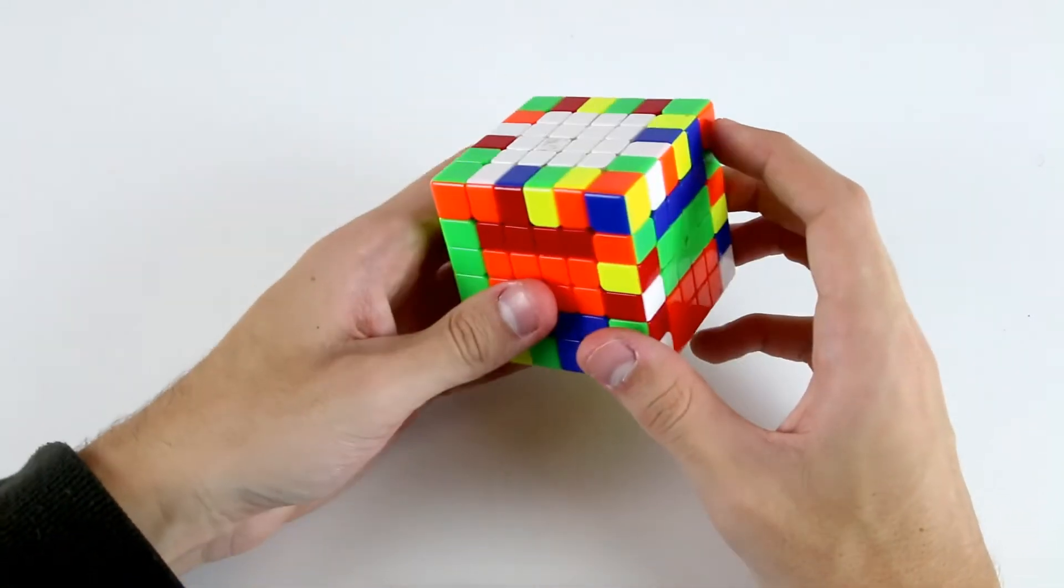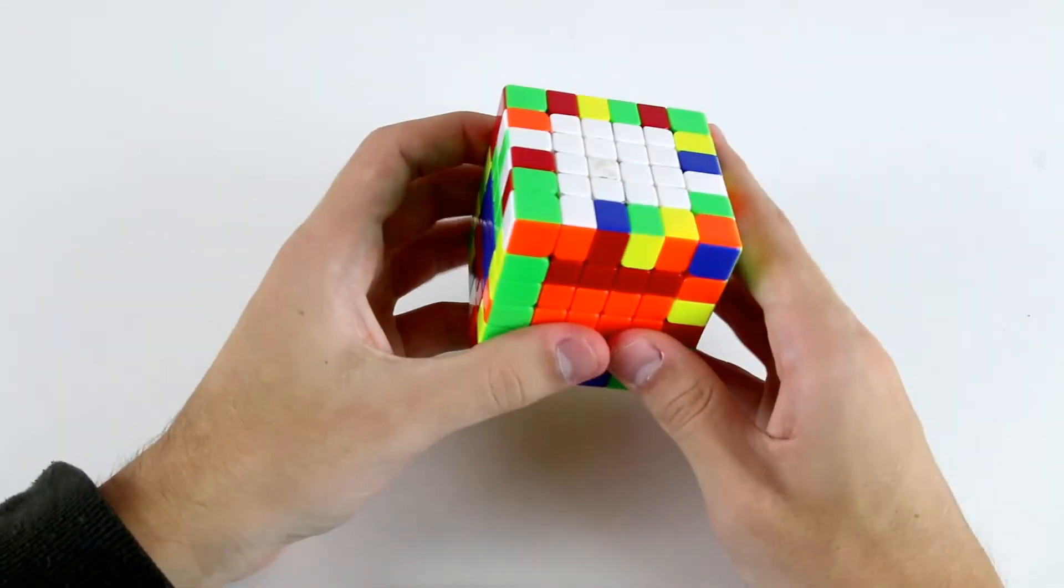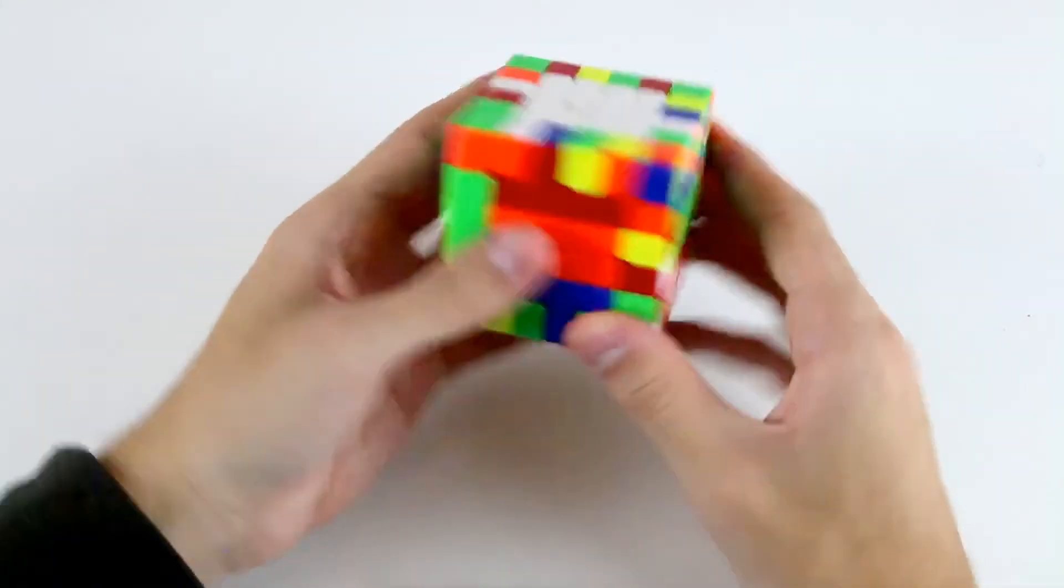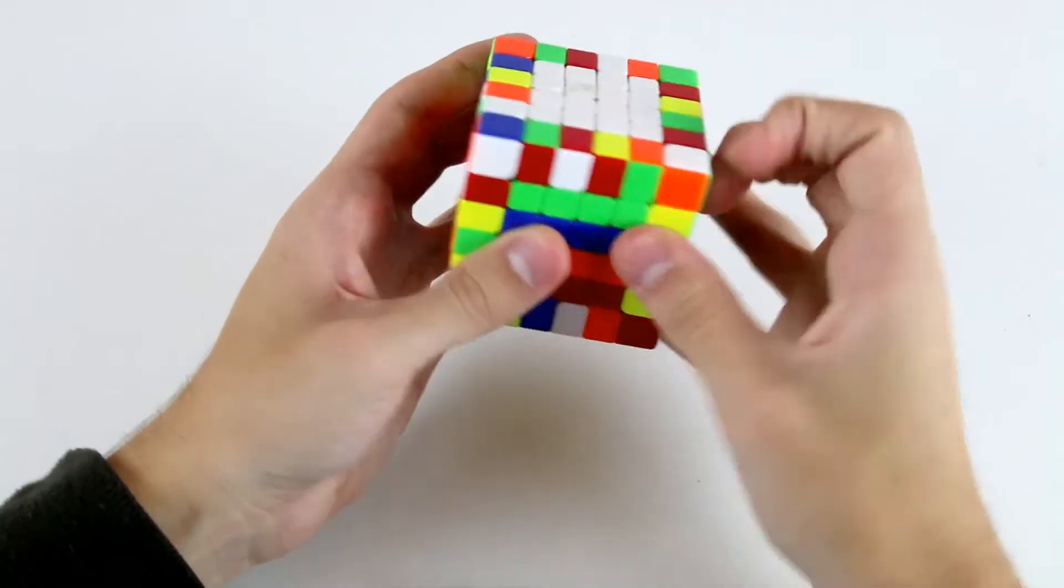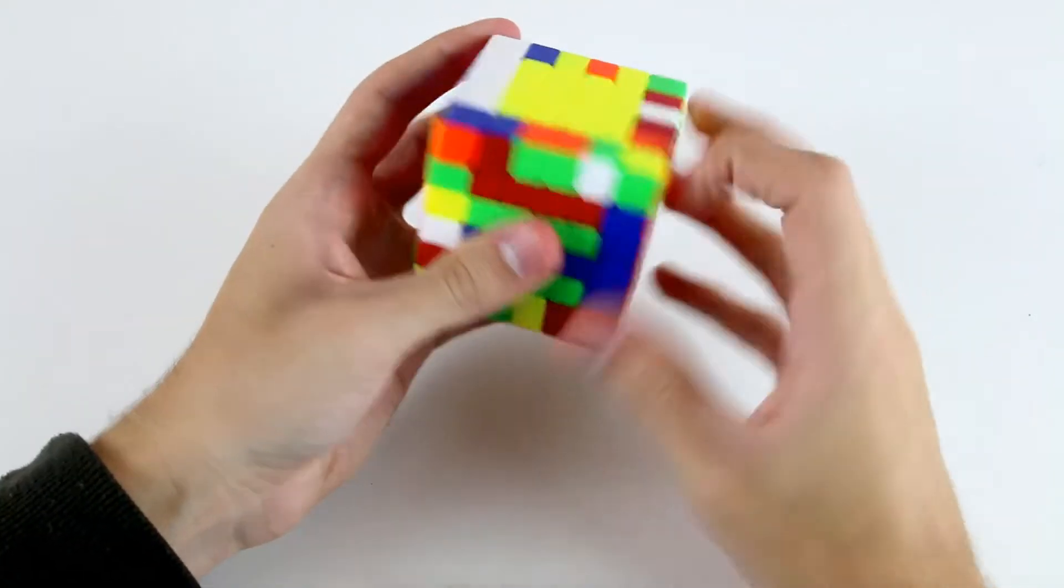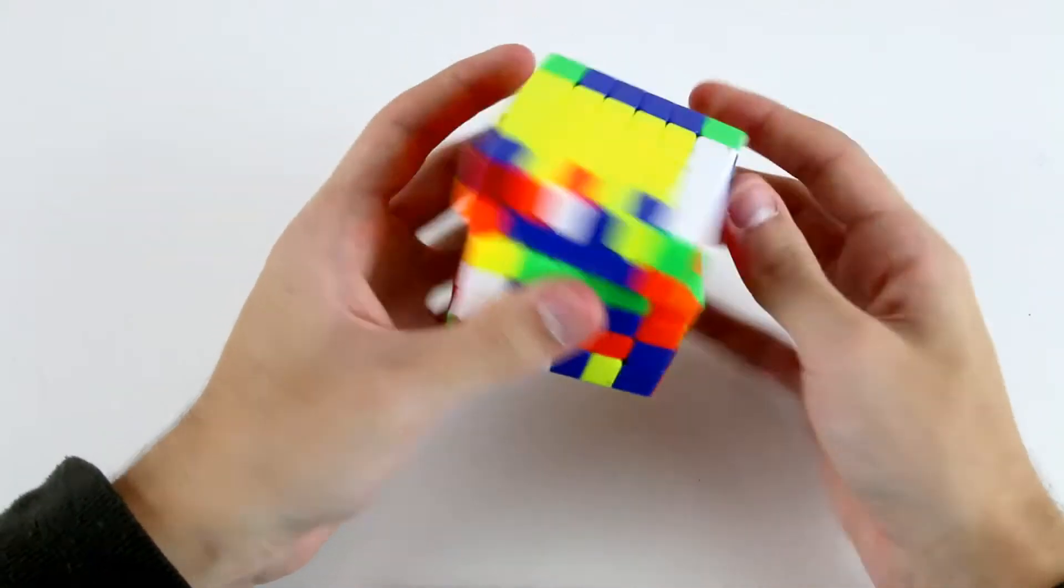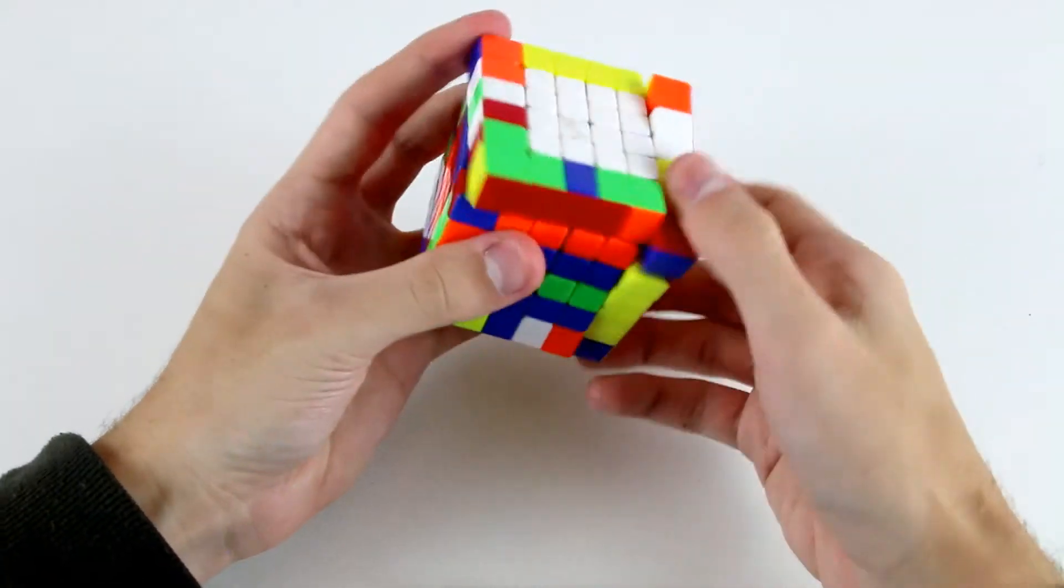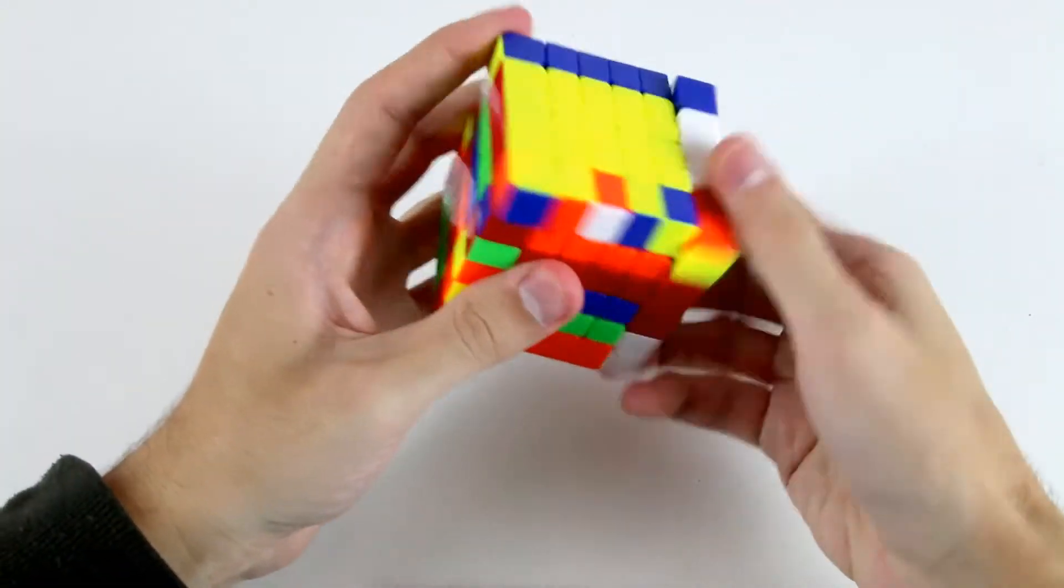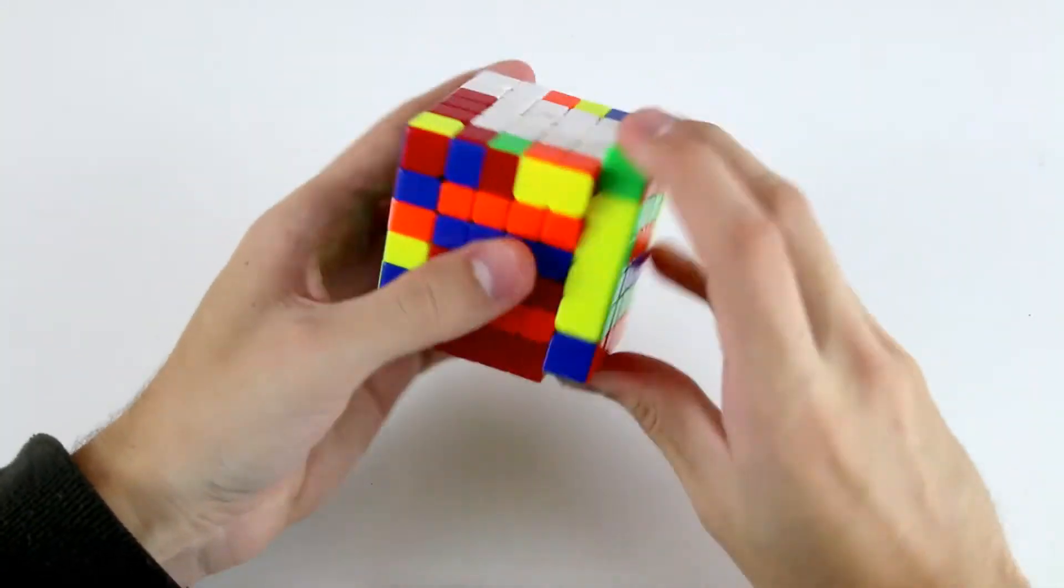For example, one goal that you can try and have during your edge pairing is to never really stop turning, so never have more than like a one second pause. You can try and practice solving edges and then not pausing at all and just continuing to solve pieces. This can be kind of like a practice drill where you're forcing yourself not to pause at all, basically always keep turning and keep solving.